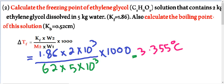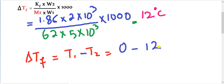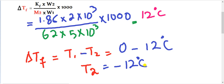Now we calculate freezing point. Del Tf equals T1 minus T2. T1 is the water freezing point, 0 degrees centigrade. We rearrange to find T2 equals T1 minus Del Tf. Substituting, T2 equals 0 minus 3.355, giving minus 3.355 degrees centigrade. Wait — we get T2 equals negative 12 degrees — that is the freezing point of the solution.